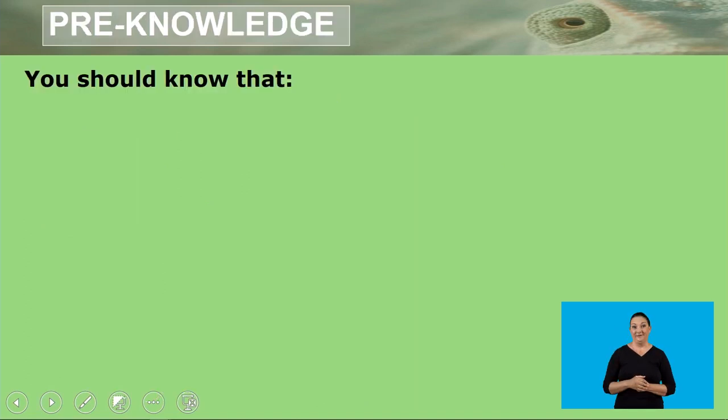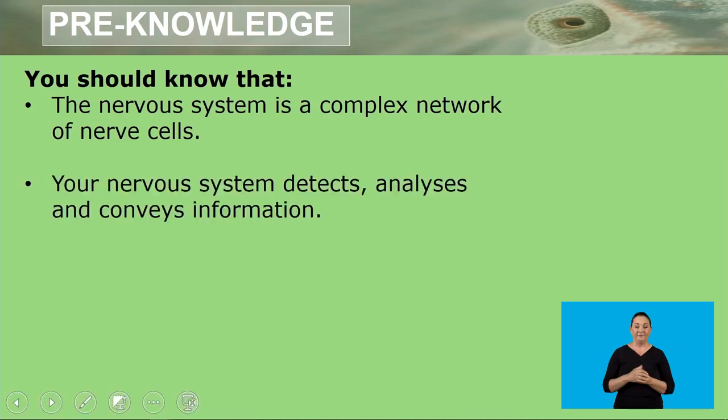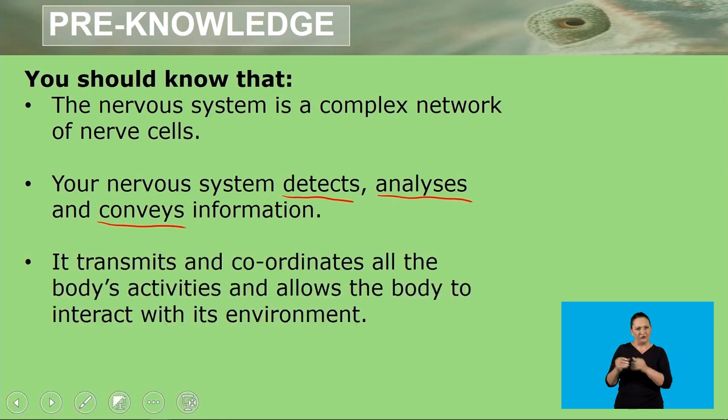You should know that the nervous system is a complex network of nerve cells. Your nervous system detects, analyzes, and conveys information. It transmits and coordinates all the body's activities and allows the body to interact with its environment.